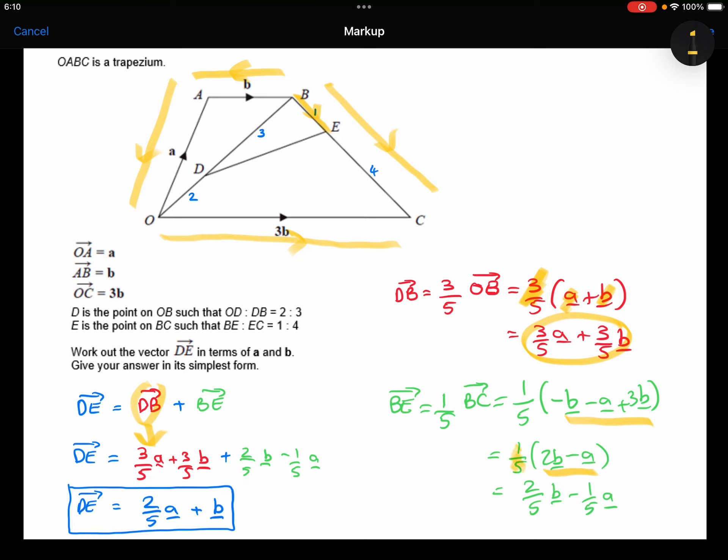And the 1 fifth of the 2b is 2 fifths b. The 1 fifth of the minus a is minus 1 fifth a. And you can see I've plugged that down.